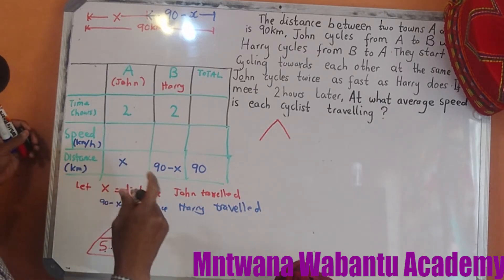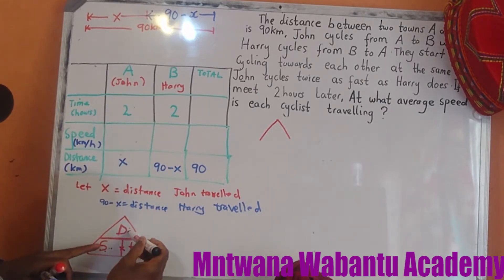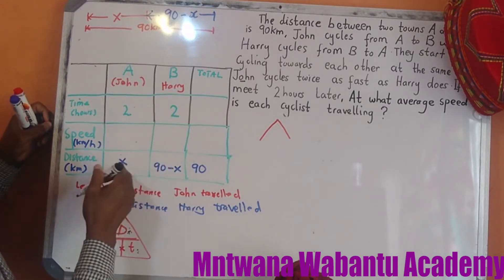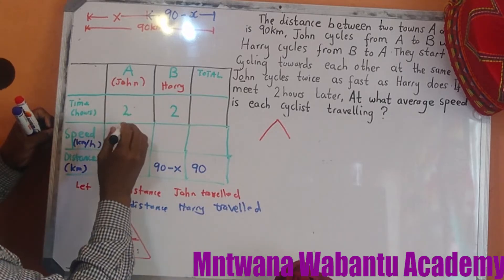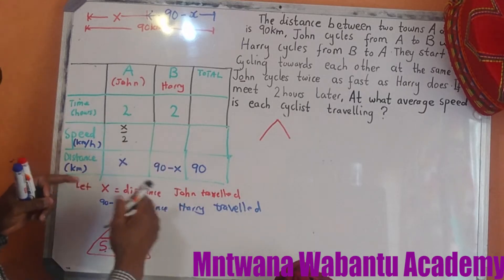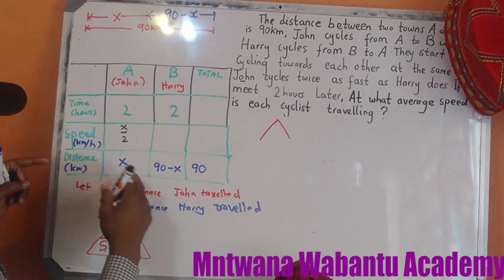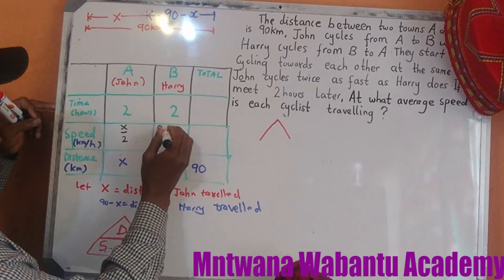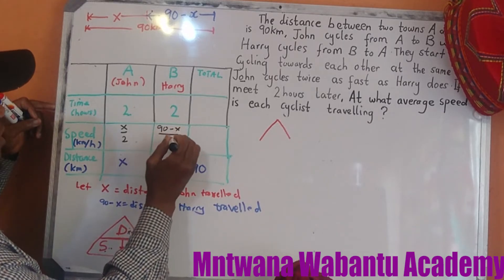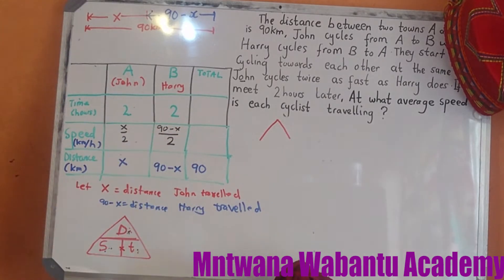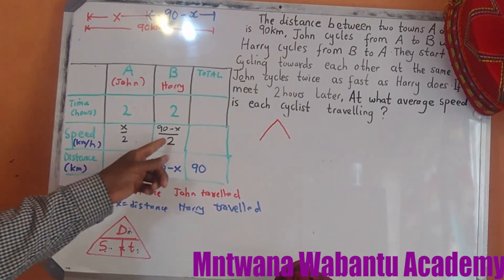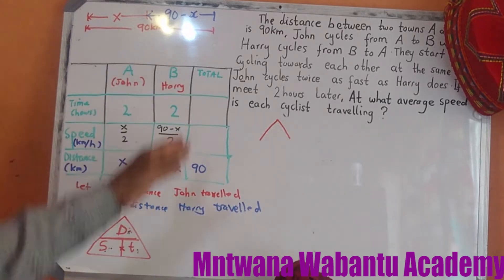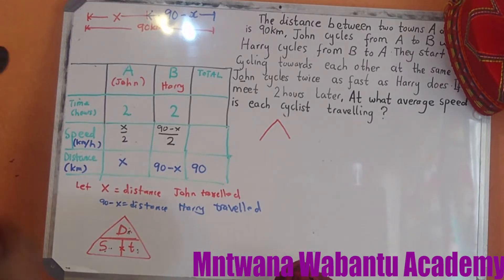So speed equals distance over time. For John, the distance is x and the time is 2 hours, so John's speed equals x over 2. For Harry, the distance is 90 minus x and the time is also 2 hours, so Harry's speed equals 90 minus x over 2.